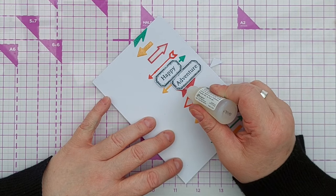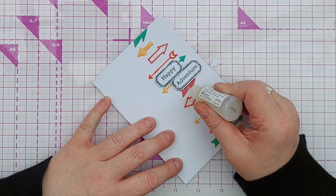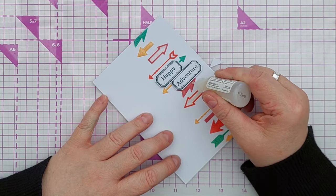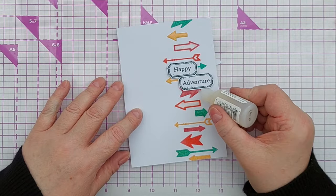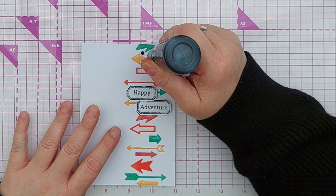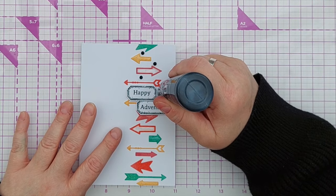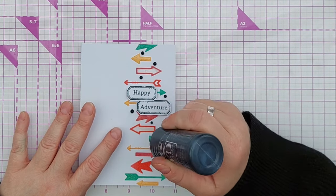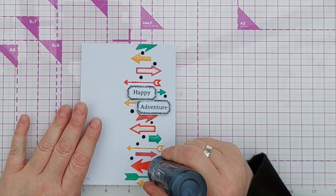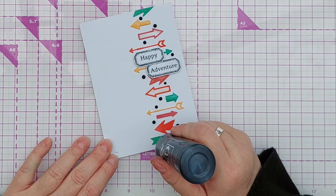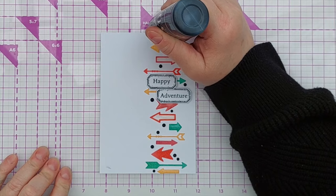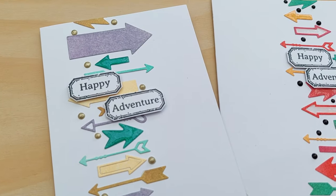I did think about sprinkling some glitter on the arrows that I'd added glossy accents to but I decided not to in the end. I didn't feel that it needed any glitter on this card. As a final finishing touch I added some Nouveau drops. I decided to use black Nouveau drops because I wanted a bit more black. I didn't want the sentiment to be the only black. It looked a bit lonely I guess so I added some black Nouveau drops and that's it, that's this card finished.